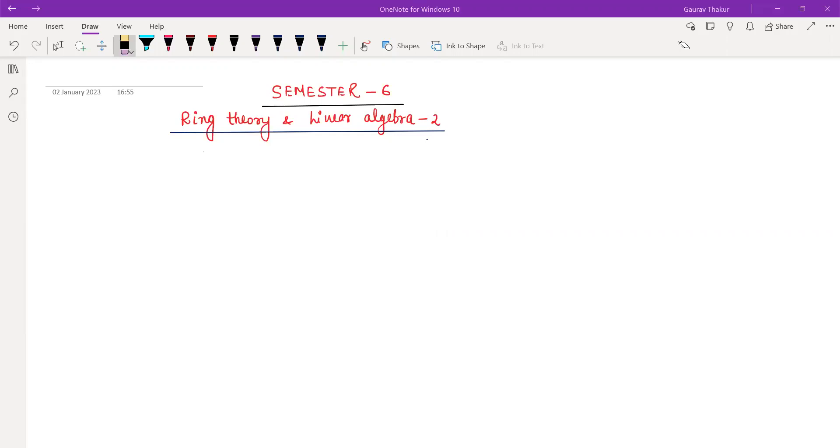Okay, so in this video we are going to discuss the syllabus of Ring Theory and Vector Algebra 2 of semester 6 and also the books which we will be using for this paper. So let's start the video. As the name suggests, the name of our paper is Ring Theory and Linear Algebra 2.